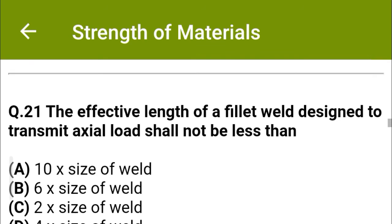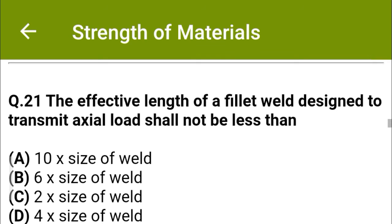Next question: The effective length of fillet weld designed to transmit axial load shall not be less than — option A: 10 × size of weld, option B: 6 × size of weld, option C: 2 × size of weld, option D: 4 × size of weld. The correct answer is option D: 4 × size of weld.